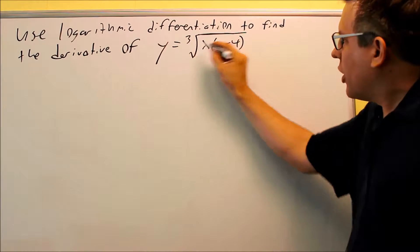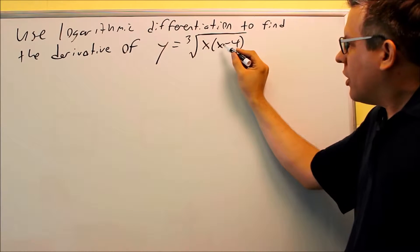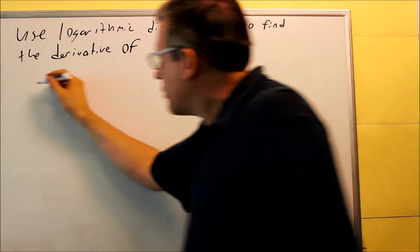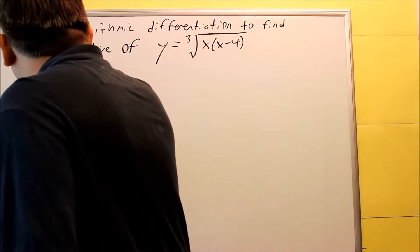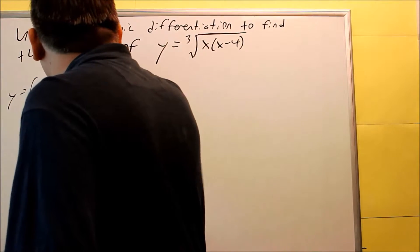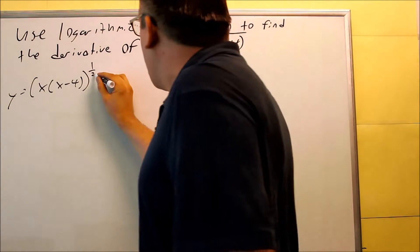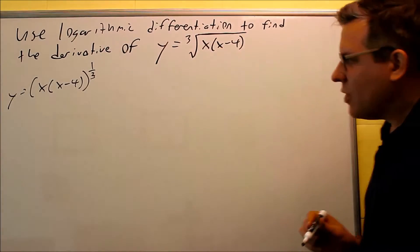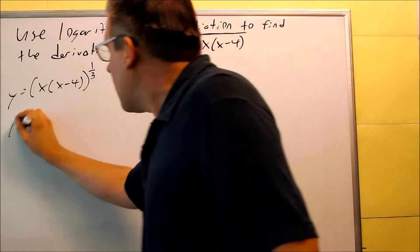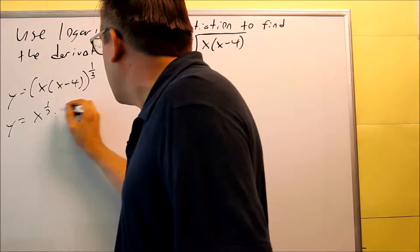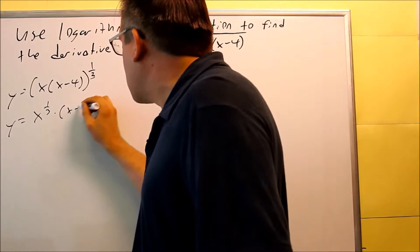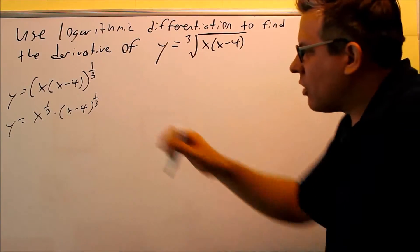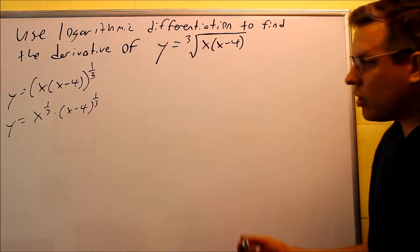Either way you want to do it, you definitely want to write this as powers. So this is the same thing as x times (x - 4) all raised to the 1/3 power because you have a cube root there. And this can also be written as x to the 1/3 times (x - 4) to the 1/3.